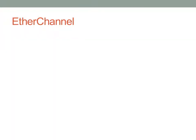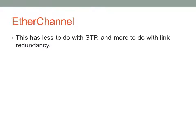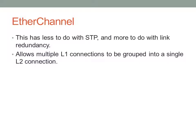The next feature isn't necessarily SpanningTree specific: EtherChannel performs link aggregation, bonding multiple physical connections into a single Layer 2 link. This has less to do with SpanningTree and more to do with redundancy. Because we're bundling multiple Layer 1 connections into a single Layer 2 connection, we don't have to worry about Layer 2 loops. Even though there may be multiple cables, there's only one Layer 2 connection, so there are no loops in the topology.